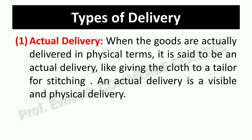Next are types of delivery. Delivery can be of three types: actual delivery, constructive delivery, and token delivery. Actual delivery is when goods are physically transferred to another person. For example, if we go to a tailor and hand over the cloth to the tailor directly, that is actual delivery — it is visible and physical.